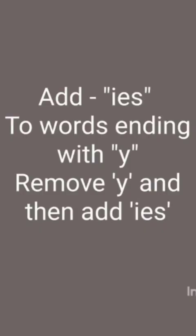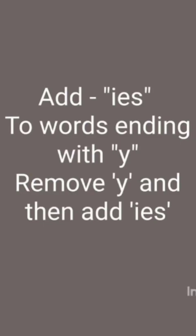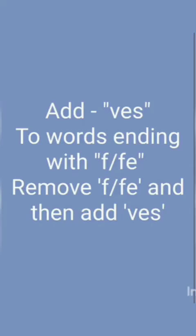Second, we add 'ies' to words that end with 'y', and we add 'ies' after removing 'y' from the spelling. For example, 'copy' (c-o-p-y) will become 'copies' (c-o-p-i-e-s).